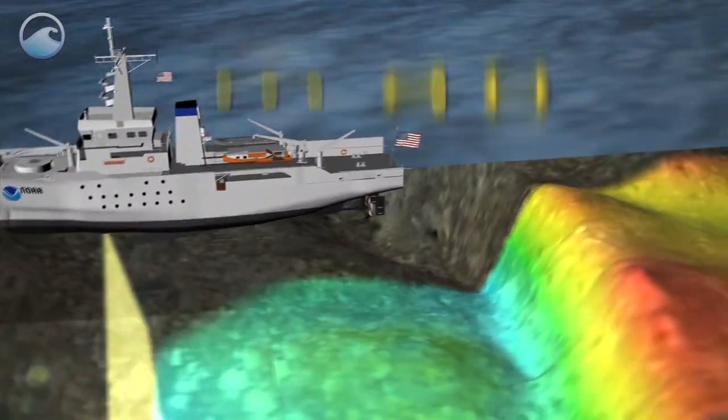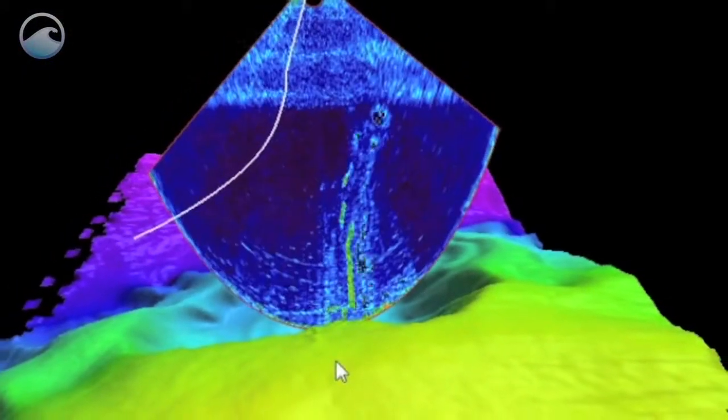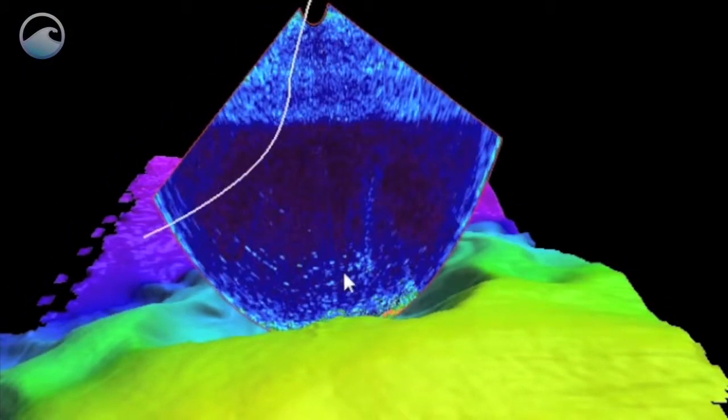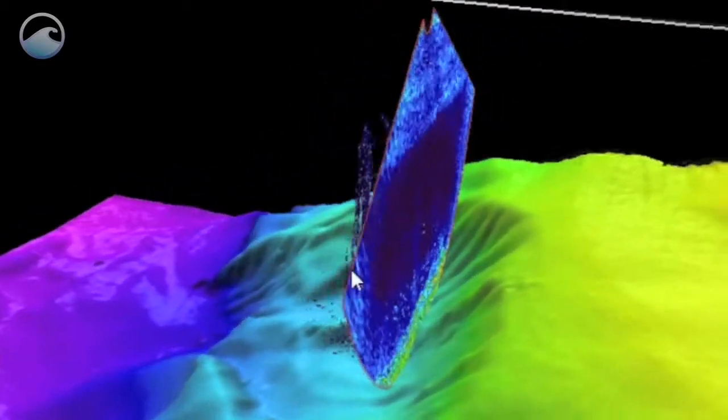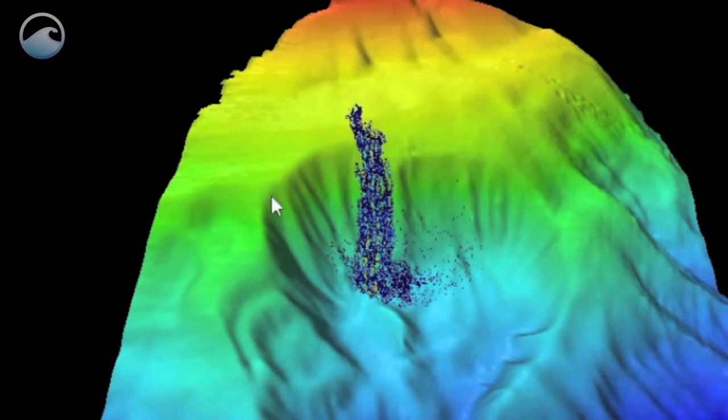It uses a hull-mounted multi-beam sonar to measure depths in the ocean. This helps produce high-resolution maps of the seafloor as deep as 8,000 meters, creating 3D imagery of underwater ridges, trenches, volcanoes, and even plumes.